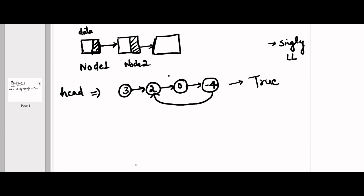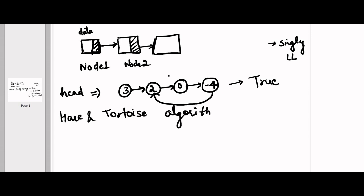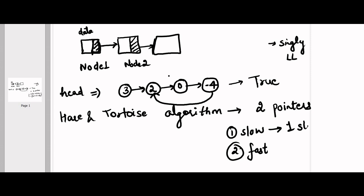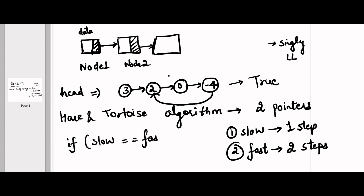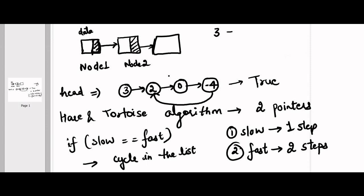To check whether a linked list has a cycle, we use an algorithm called the Hare and Tortoise algorithm, which uses two pointers: a slow pointer and a fast pointer. The slow pointer moves one step at a time, and the fast pointer moves two steps at a time. If the slow and fast pointers ever meet at the same node, that means there is a cycle. If they never meet, there is no cycle.